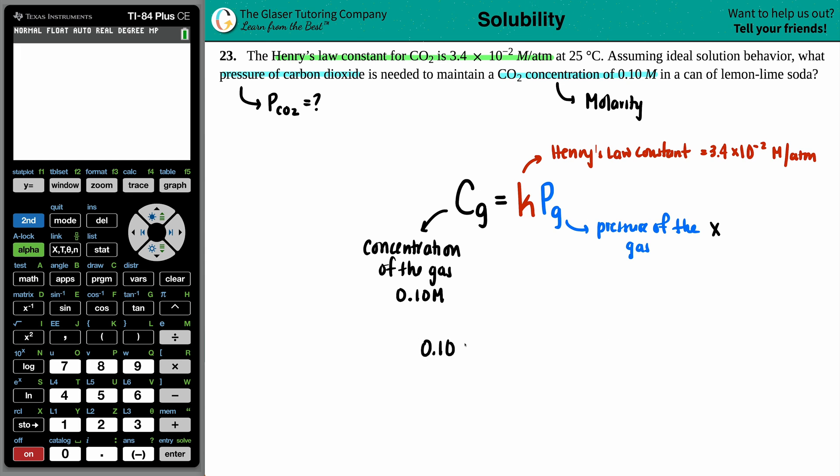Now we're ready to solve. 0.10 equals the Henry's Law constant, which is 3.4 times 10 to the negative second times X. And just before you start plugging in, make sure that you have your correct units. Molarity goes with molarity in the Henry's Law constant. ATM is going to come out with the pressure ATM. So we're good here.